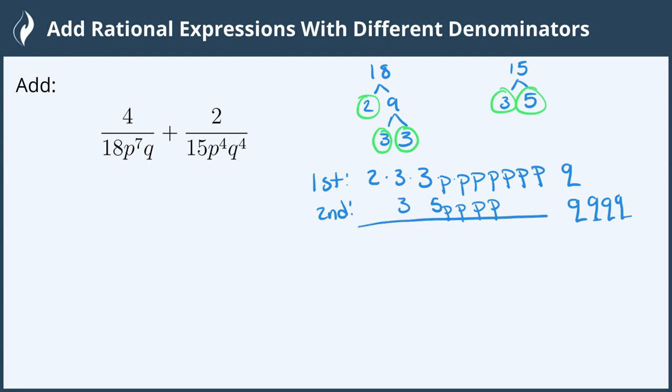Now we're going to find the lowest common denominator. We need a 2. We need a 3. It's in common so I need one of those and then I need one more 3.